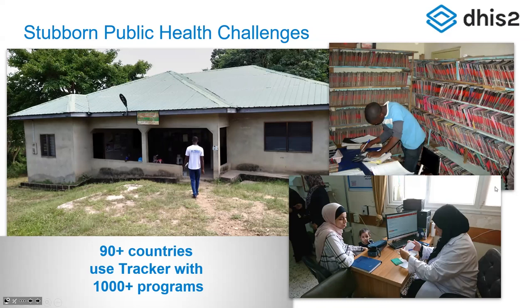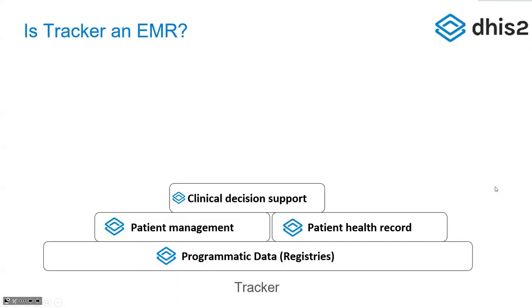At this point it has been quite successful. We have over 90 countries using DHIS2 Tracker, and the thousand programs referenced are government-owned and currently in use. There are many thousands more NGOs and other institutions using DHIS2 Tracker for all kinds of purposes. The question that always gets asked is: is Tracker an EMR?